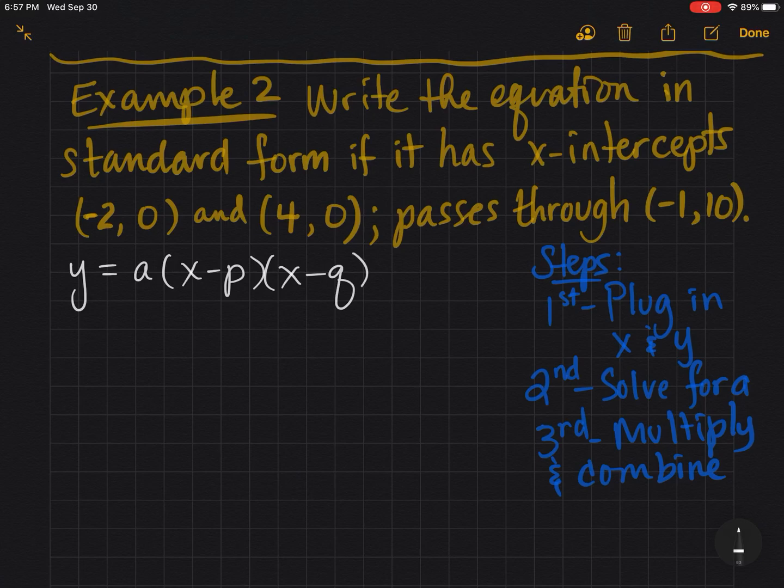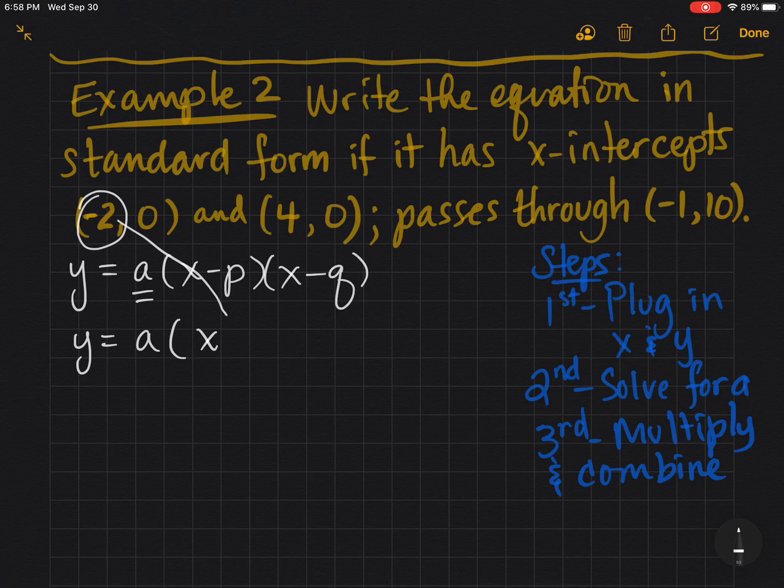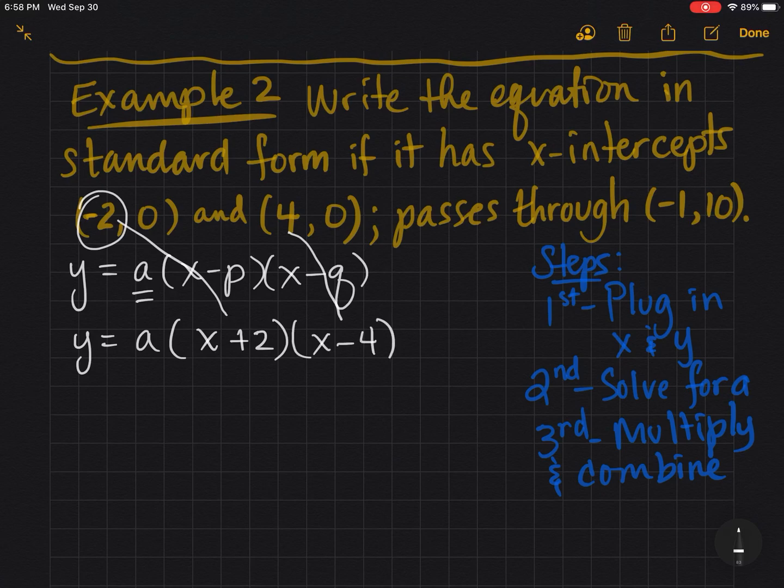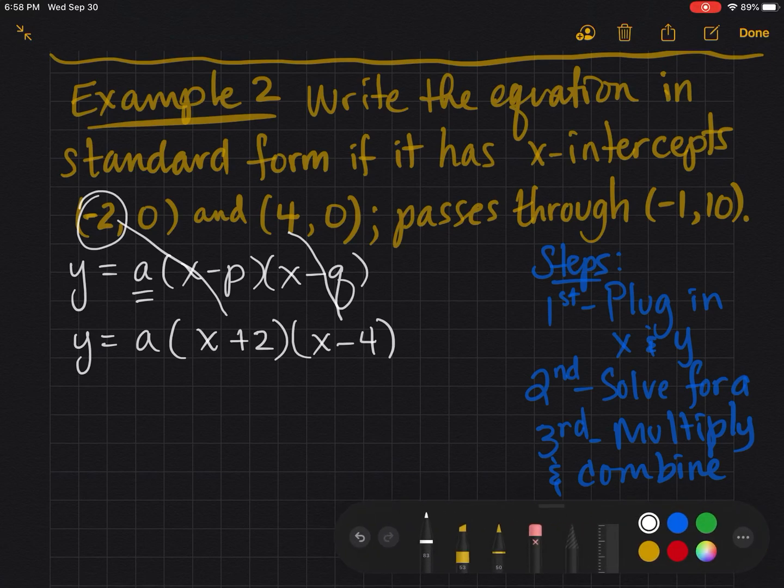We're almost there. We're going to know everything again except for a. So we're going to plug in our intercepts opposite of the sign. So we have y = a(x + 2)(x - 4). Now I forgot to plug in my x and y.